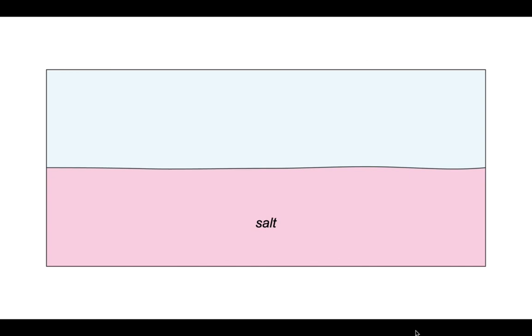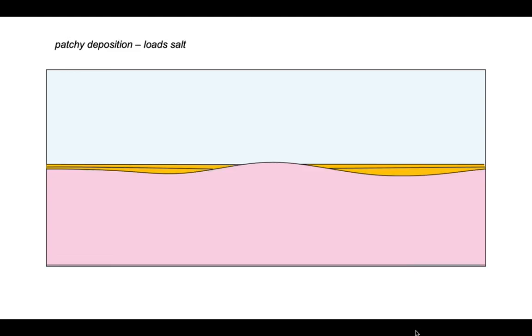So let's start off with some salt on the seabed. Sedimentation occurs across this salt layer and these sediments load the salt and the salt flows.